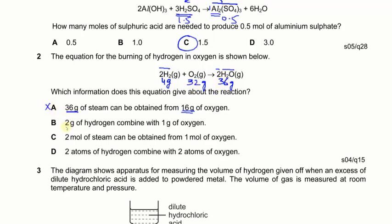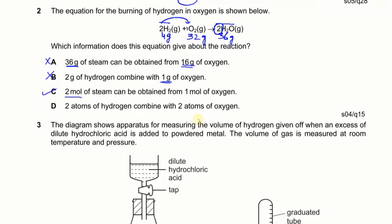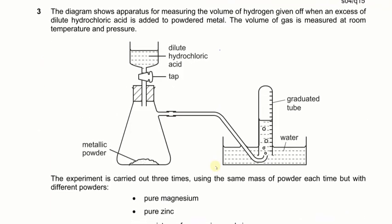Option B says two grams of hydrogen combined with one gram of oxygen — that is also wrong, because 2 grams requires 16 grams of oxygen (since 4 grams requires 32 grams). Option C: two moles of steam can be obtained from one mole of oxygen. According to the equation, two moles of water require one mole of oxygen, so that is the correct answer.